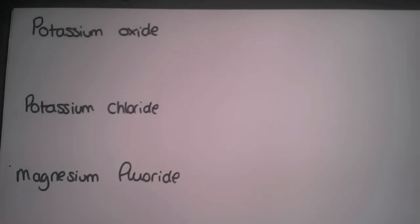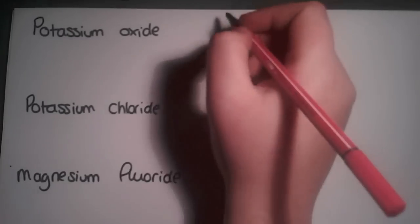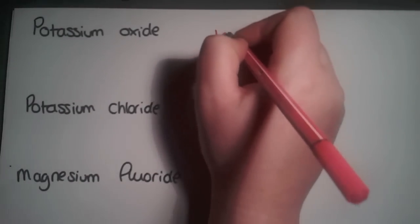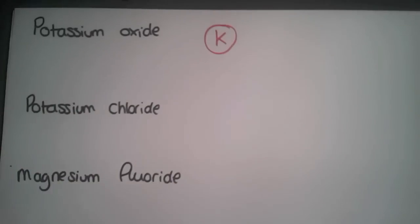When using this method to write formulae, you're going to look in the data book to find the symbols of your two elements. For our first example, we have potassium oxide, so potassium is K and we're going to put a circle around it. You're going to look and see what group potassium is in, and you'll find it's in group one, so you're going to drop one arm onto your potassium.